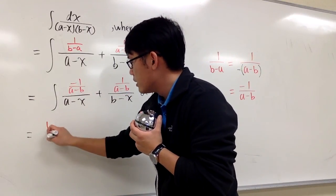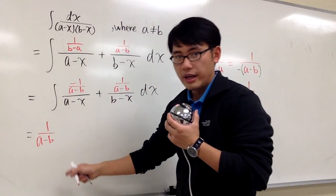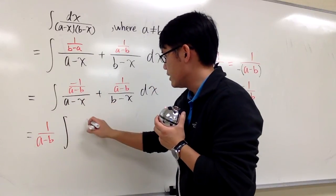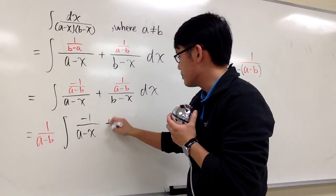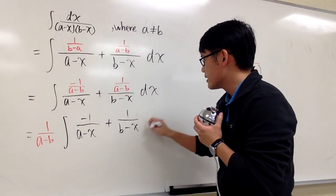1 over (a-b) over (b-x) dx. And I get to factor out a factor 1 over (a-b), because they both have that.